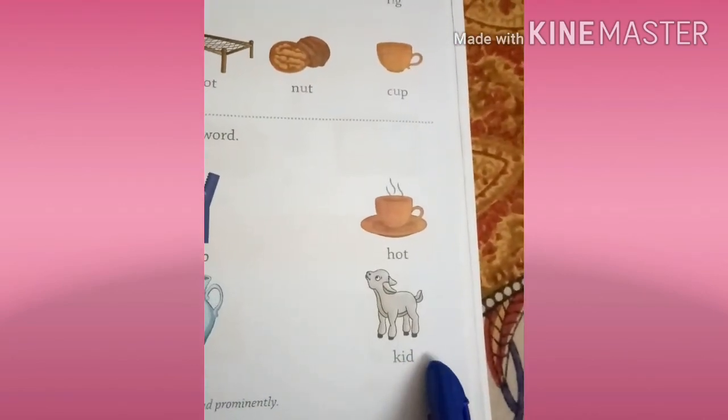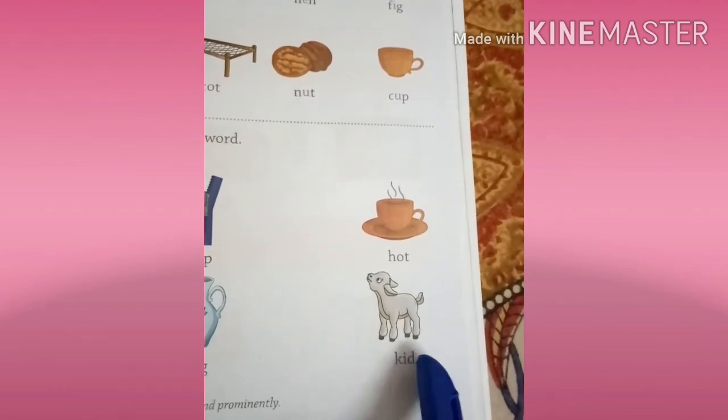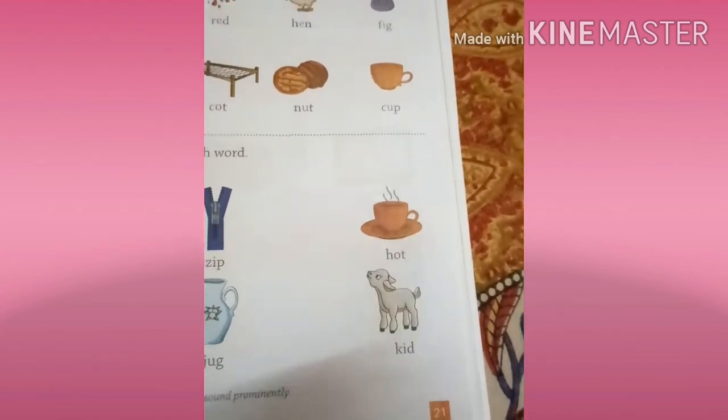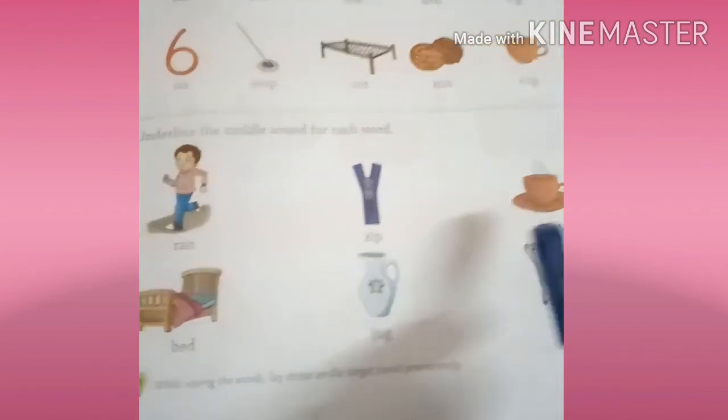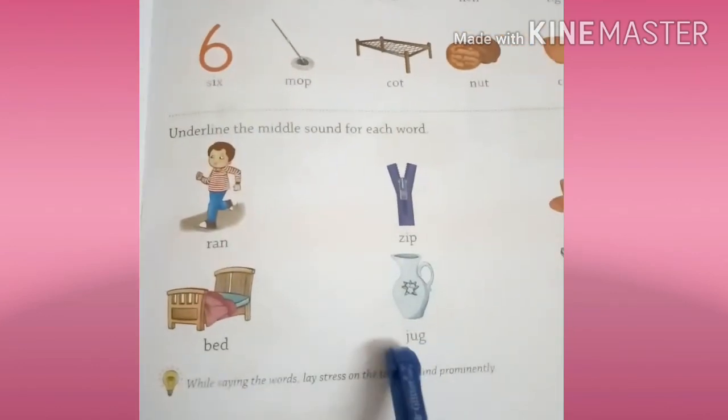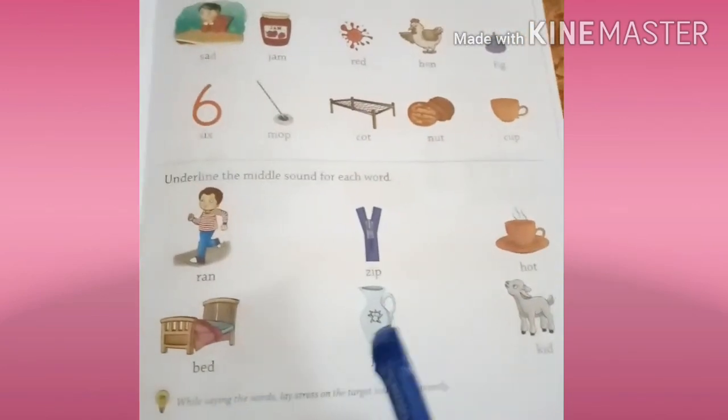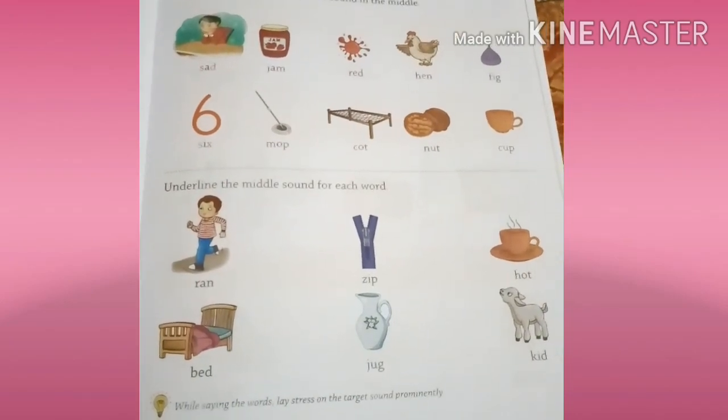K-I-D, kid, okay. K-I-D, kid. K sound is K, I sound is I, D sound is D. K-I-D, kid, okay. K-I-D, kid. One, R-A-N ran, Z-I-P zip, H-O-T hot, B-E-D bed, J-U-G jug, K-I-D kid. Okay, you all practice these middle sound words, okay. Bye children.